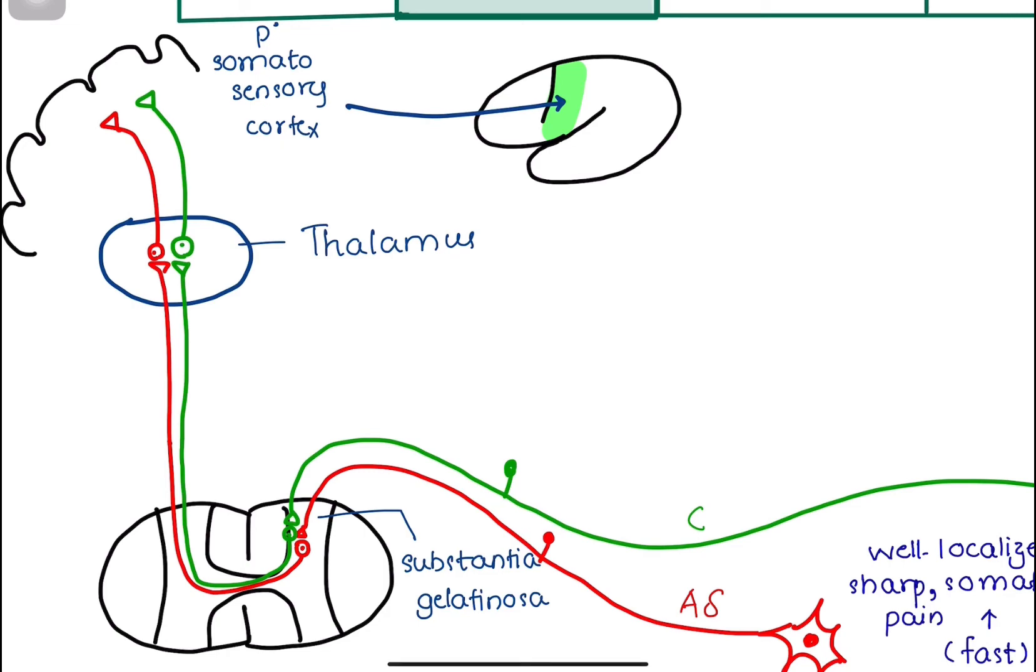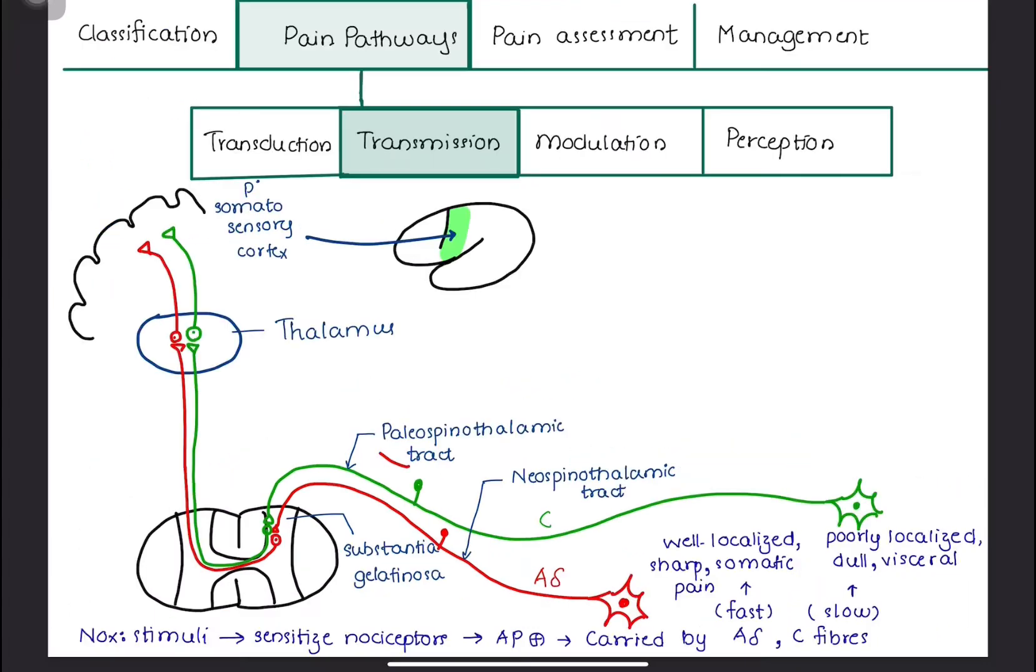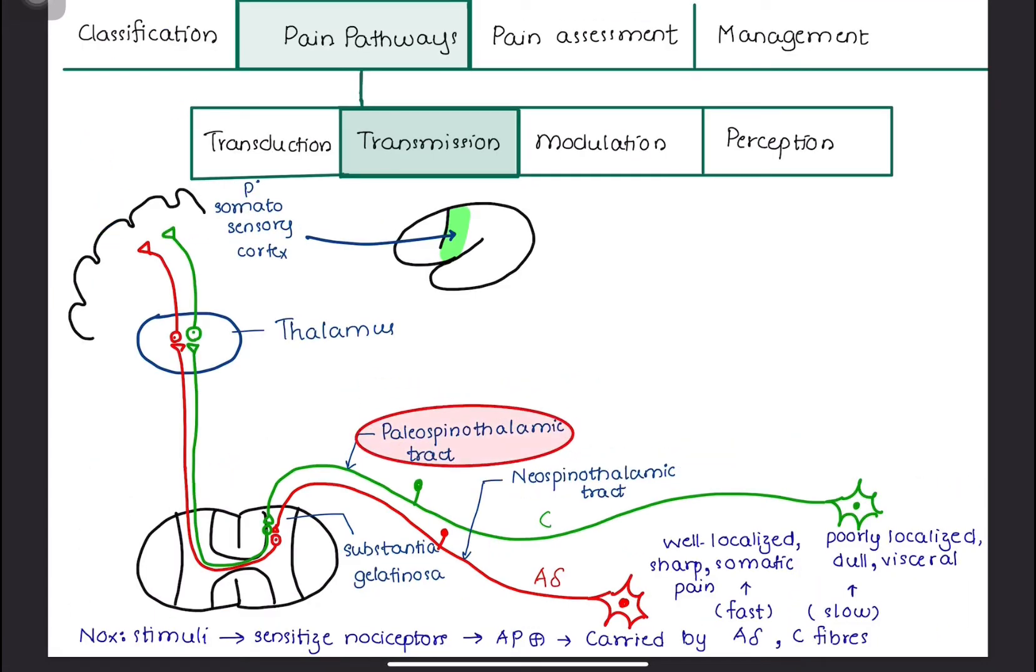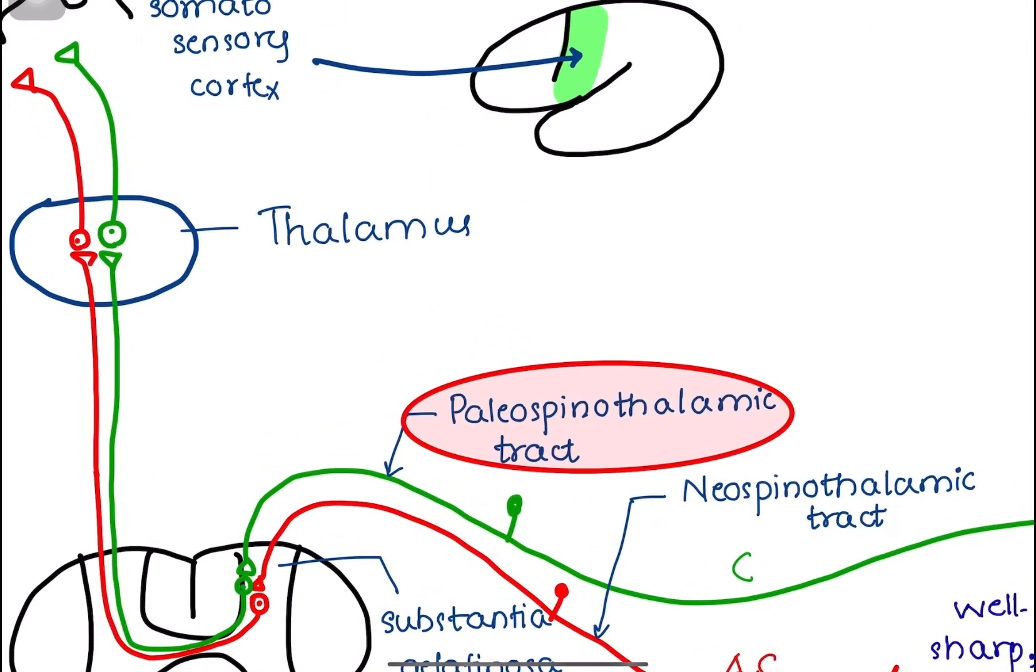Because of this double innervation, pain signals take two pathways to the brain through the paleospinothalamic and neospinothalamic tract. In the paleospinothalamic pathway, only one-third of the fibers pass all the way to the thalamus. Instead, some fibers terminate in three areas.